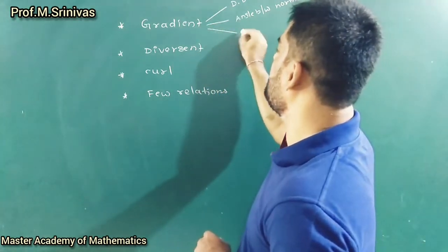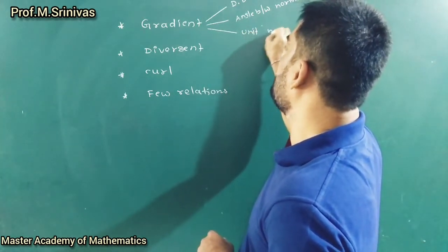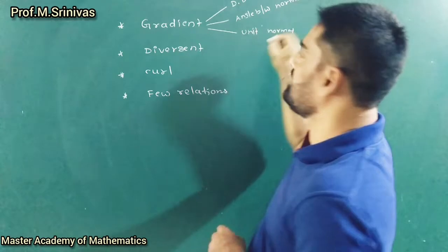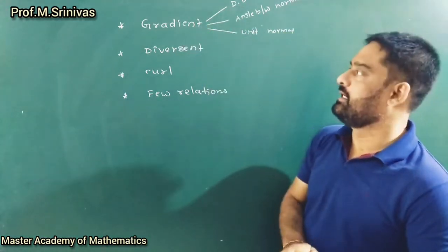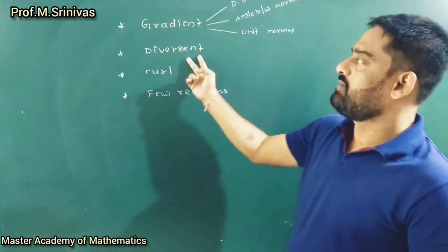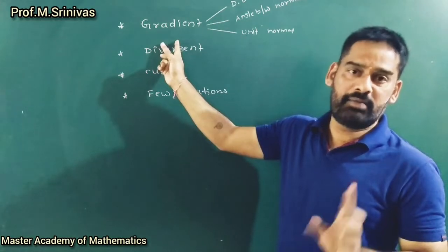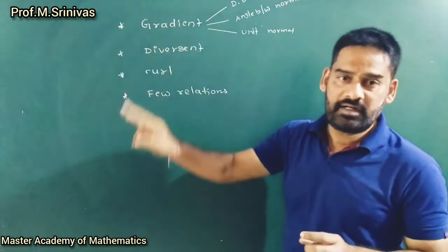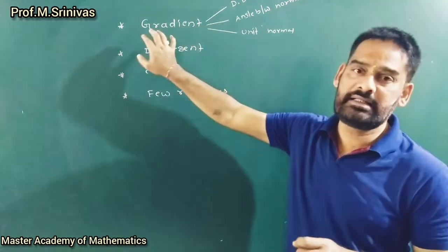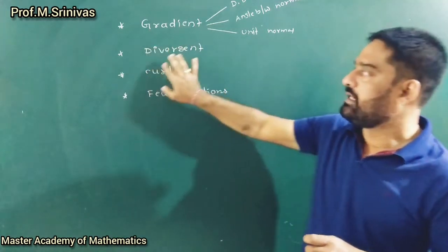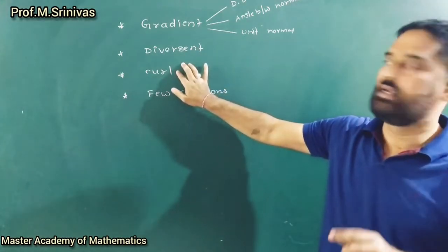The next one is the unit normal vector. These are the three important aspects you can expect in your gradient. Coming to divergence — remember, gradient is defined only for the scalar point function; a vector differential operator associated with a scalar point function is simply called gradient. Whereas divergence is applicable for the vector point function.